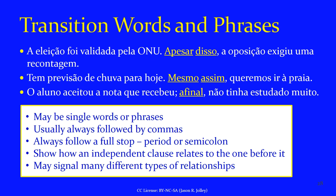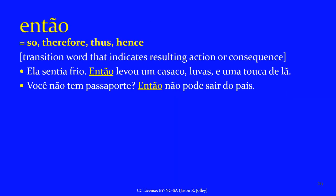The first transition word is ENTÃO, which means 'so,' 'therefore,' 'thus,' or even 'hence.' It indicates a resulting action or consequence. 'Ela sentia frio. Então, levou um casaco, luvas e uma touca de lã' — she was cold, therefore she took a coat, gloves, and a wool hat. 'Você não tem passaporte? Então, não pode sair do país' — you don't have a passport? Therefore you can't leave the country. GERALMENTE means 'generally' or 'usually' — it indicates usual conditions or actions. 'Geralmente, os alunos estudam bastante um dia antes da prova.' 'Não posso recomendar um bom restaurante. Geralmente como em casa' — I usually eat at home.